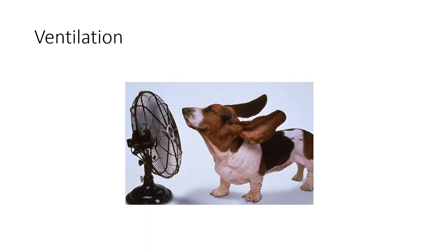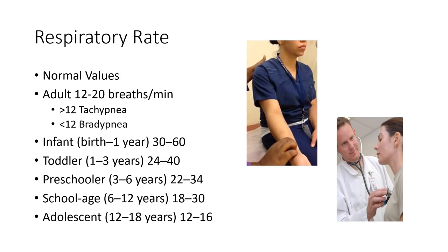Getting into ventilation — looking at breathing rate. Normal values for respiratory rate: in adults, it's going to be between 12 to 20 breaths per minute. Greater than 20 is tachypnea — analogous to tachycardia. Bradypnea would be less than 12. So 12 to 20 is normal; above 20 is faster breathing than normal.